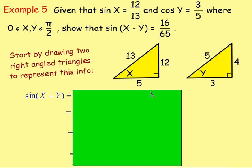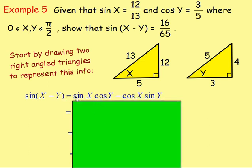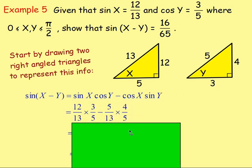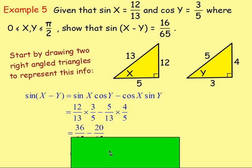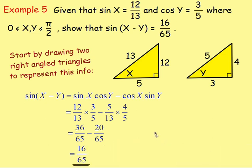Expanding sine(x minus y) gives sine x cos y minus cos x sine y. Sine x is given as 12/13. Cos y, using the triangle, is 3/5. Cos x, adjacent over hypotenuse, is 5/13. And sine y, opposite over hypotenuse, is 4/5. Working that out gives 36/65 minus 20/65, which equals 16/65 — proving the result.